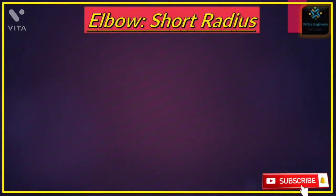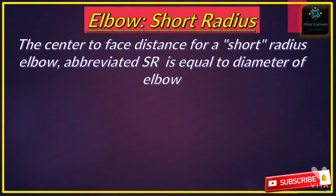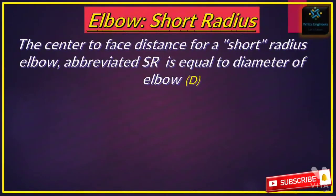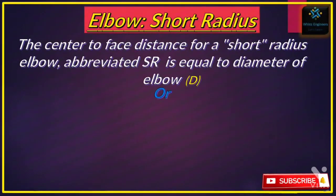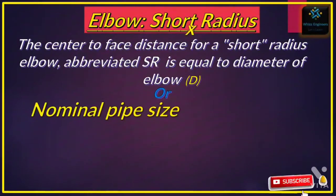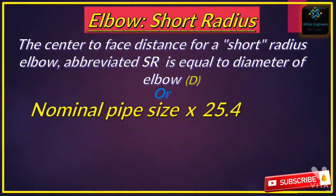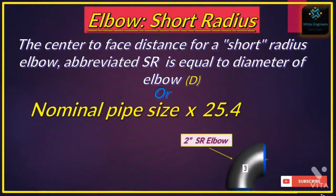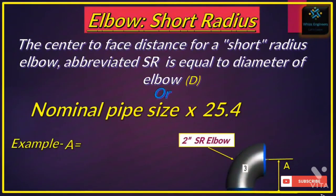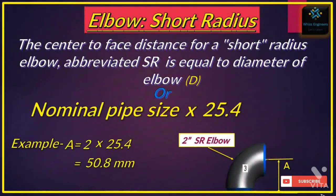Now we will see the short radius elbow. The center-to-face distance for a short radius elbow, abbreviated as SR, is equal to the diameter of the elbow. If you calculate it in mm, it will be nominal pipe size multiplied by 25.4. For example, for a 2-inch SR elbow, A is equal to 2 × 25.4, so A equals 50.8 mm.